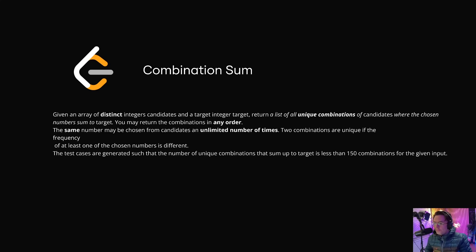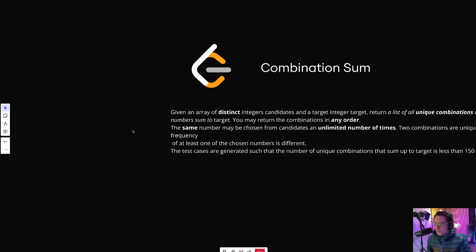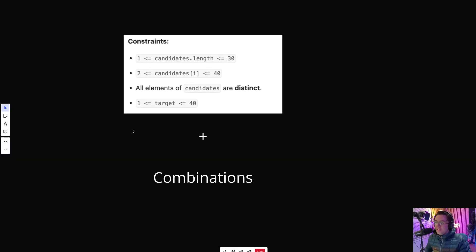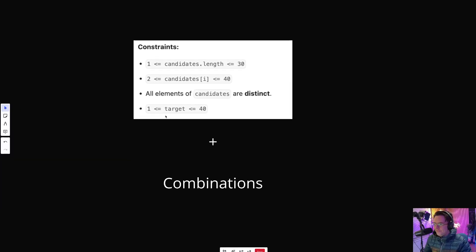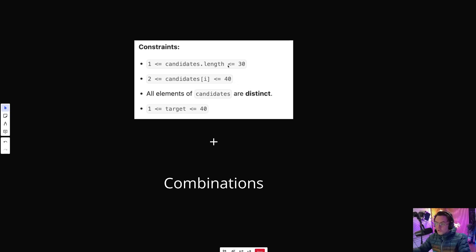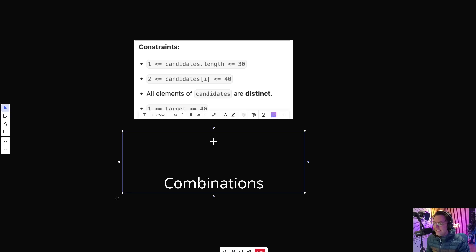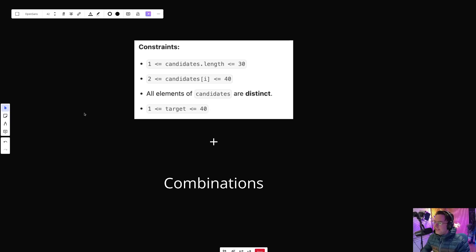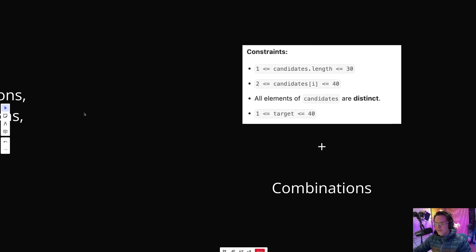In this video, we're going to be tackling the LeetCode question Combination Sum. This is a backtracking question. We can go to the LeetCode description and look at the constraints, and we see unusually small numbers — 30 and 40 — which is an unusually small constraint. Coupled with the fact that this has to do with combinations, that's a dead giveaway: backtracking question.